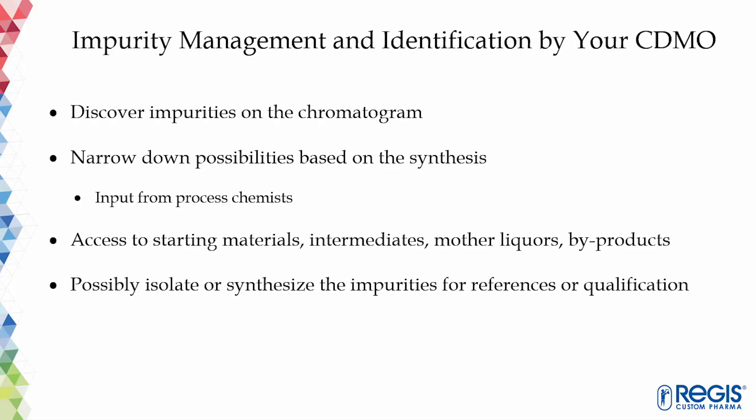Impurity identification can be done standalone by a company with a certain analytical capacity. But we realize that identifying and managing impurity together with developing and manufacturing the API within your CDMO works much better. The analytical department at your CDMO has the full knowledge of API analytical results, history, and the trend of impurities in different batches. So the impurities are first discovered on the chromatograms of a final API analysis, and then, based on the level of impurities, they will be selected for structure identification or qualification.